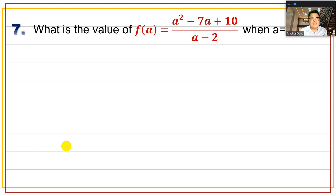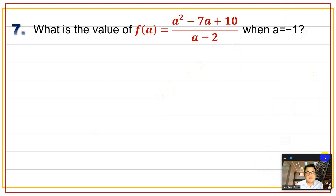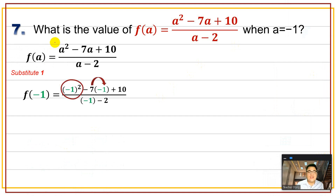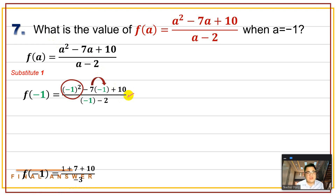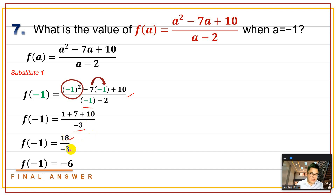Number 7: f(a) = (a² - 7a + 10) / (a - 2), with a = -1. Substitute: numerator = (-1)² - 7(-1) + 10 = 1 + 7 + 10 = 18; denominator = -1 - 2 = -3. So f(-1) = 18 / (-3) = -6.